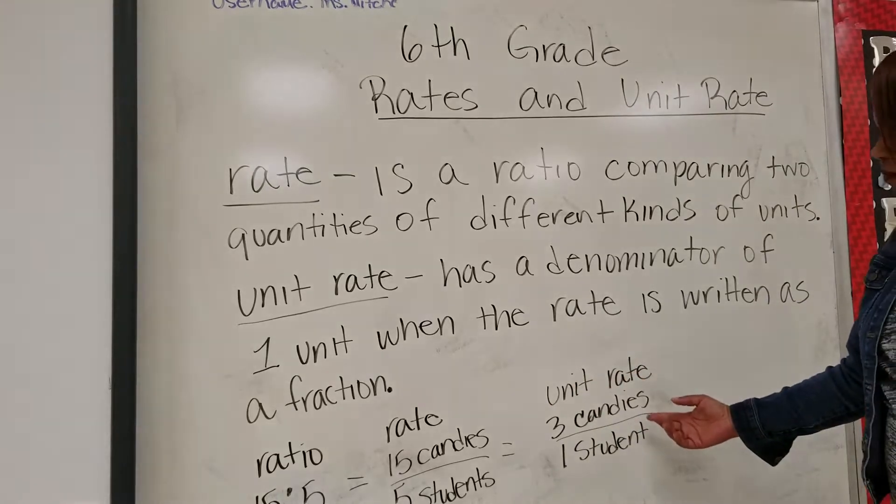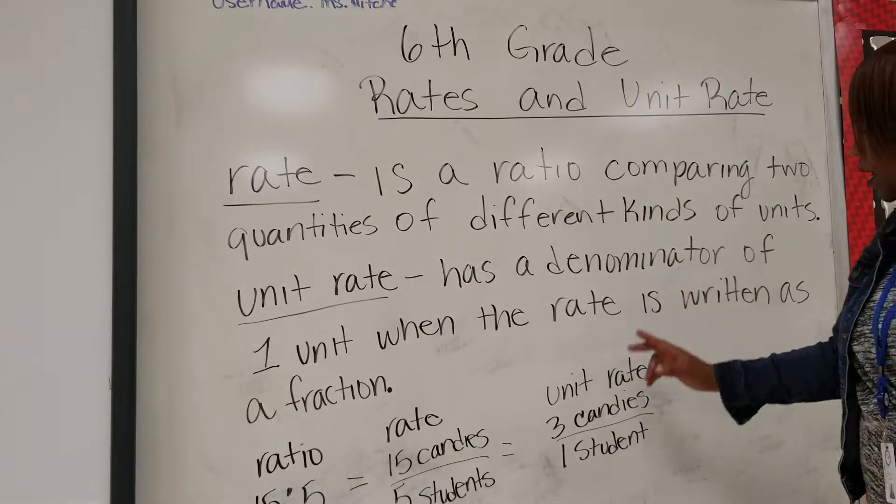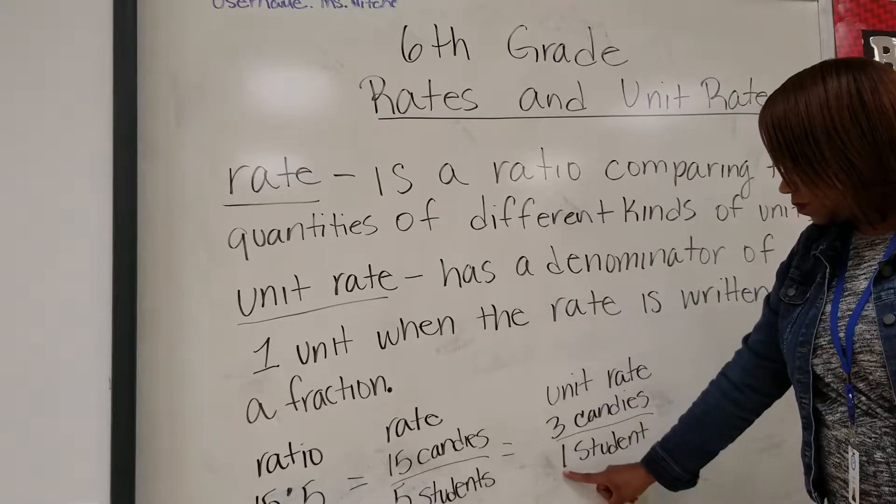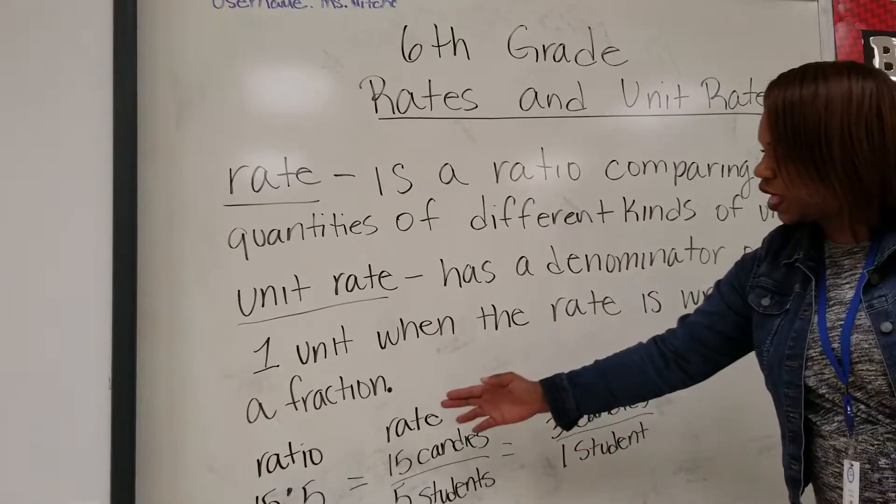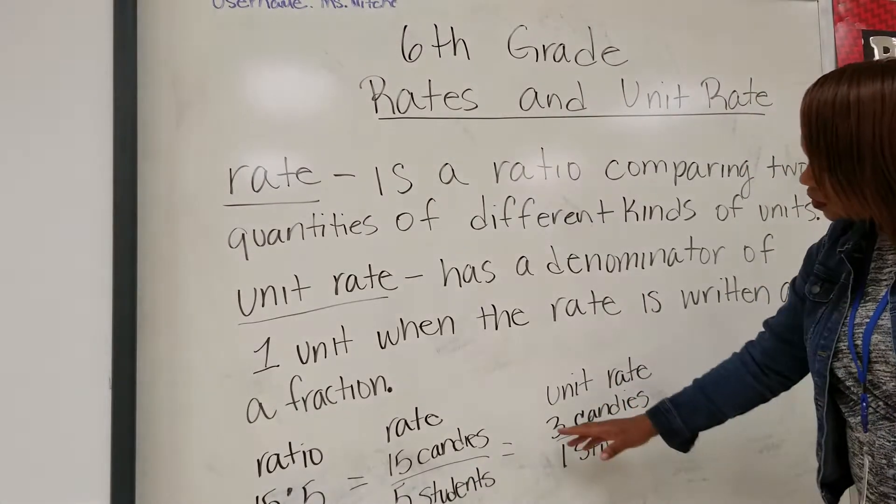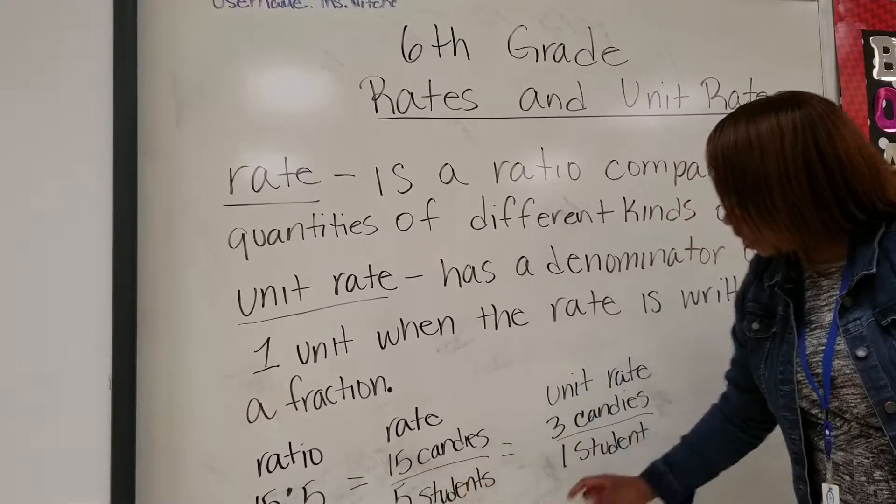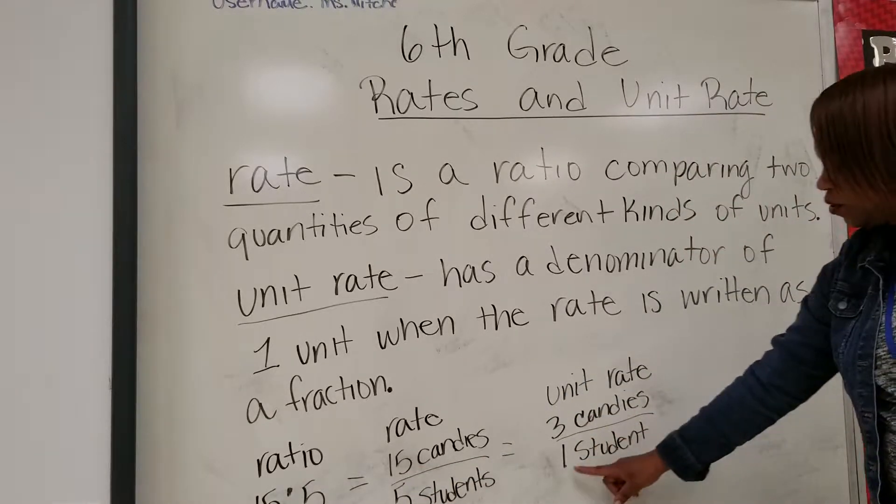The unit rate, by definition, says that it has to have a denominator of one. So if we have 15 candies to 5 students, how much would one student get? Therefore, when we divide 15 divided by 5, we get three candies per one student.